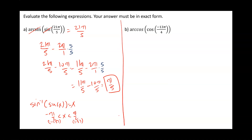In letter B, we have the inverse cosine of cosine of negative 13 pi over 4. The same thing applies for cosine — the output for inverse cosine has to be between negative pi over 2 and pi over 2. So this is going to give us negative 13 pi over 4.